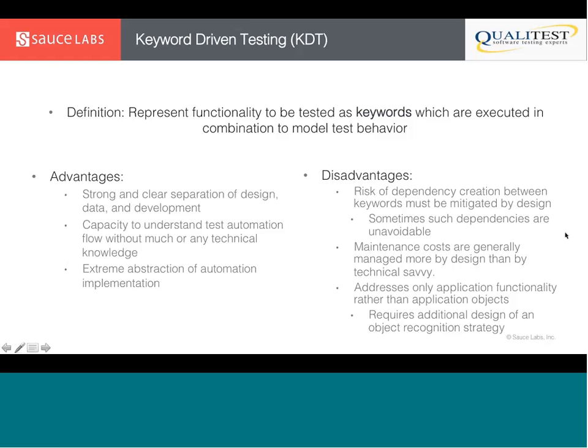Just like BDD has a domain-specific language that tests are written in, KDT provides something very similar. There's a capacity to understand what's happening with the test automation without much or any technical knowledge, because keywords are often put into a custom interface or an Excel spreadsheet where you can read the flow of tests and see which actions are being carried out — giving a strong abstraction away from the automation implementation, focusing on what we're doing with the application rather than how.